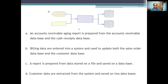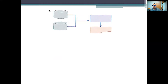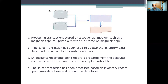Finally, we look at a flowchart and ask which sentence best describes it. Feel free to pause the video and read the exercises, but the model answer is B: the billing data are entered into a system and used to update both the sales order database and the customer database. We also have a flowchart which explains that the accounts receivable aging report is prepared from the accounts receivable master file and the cash receipt file — those two files are used automatically to prepare the aging report.